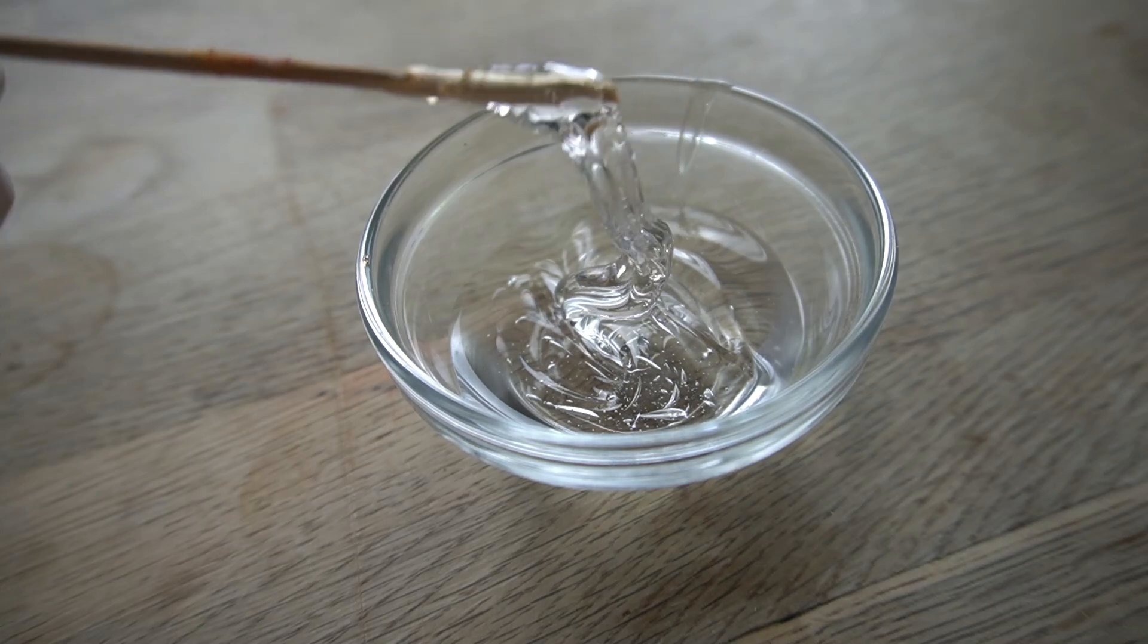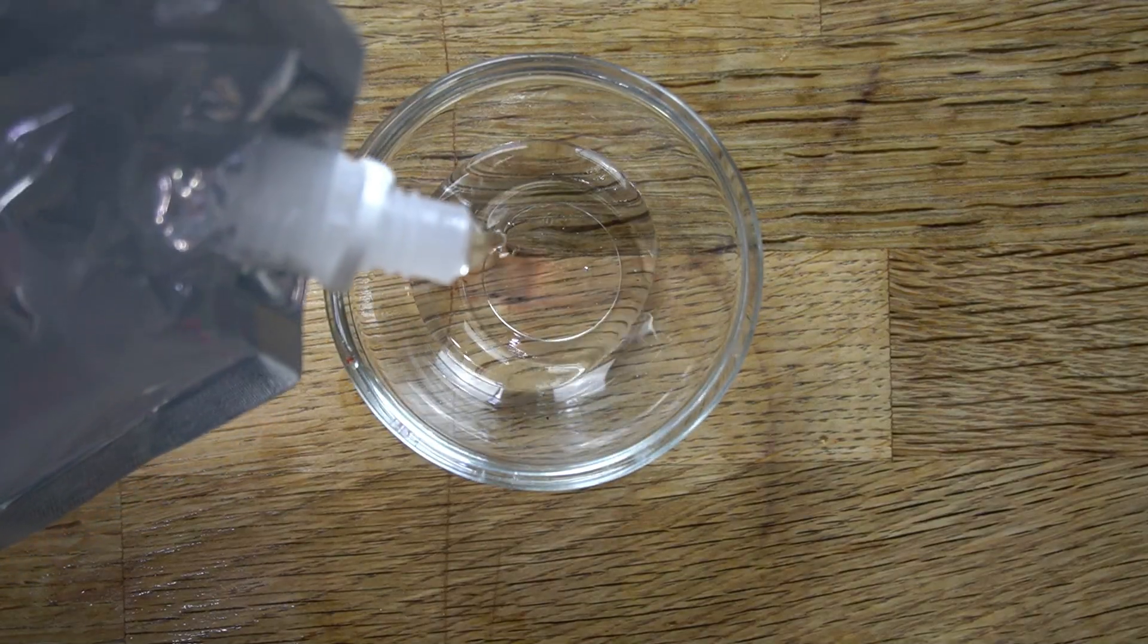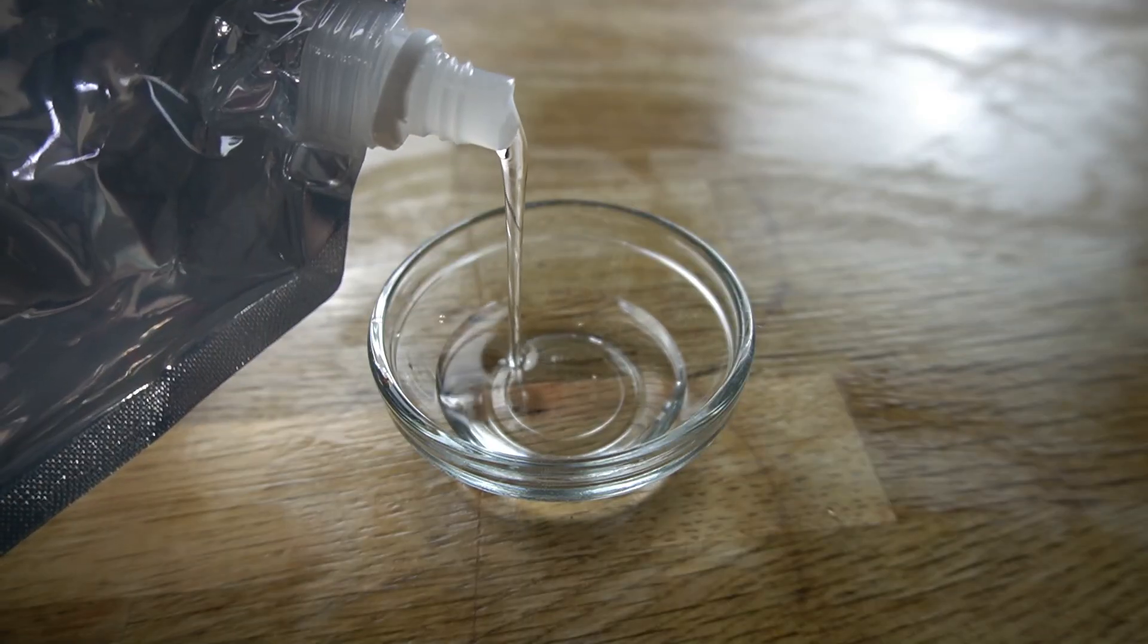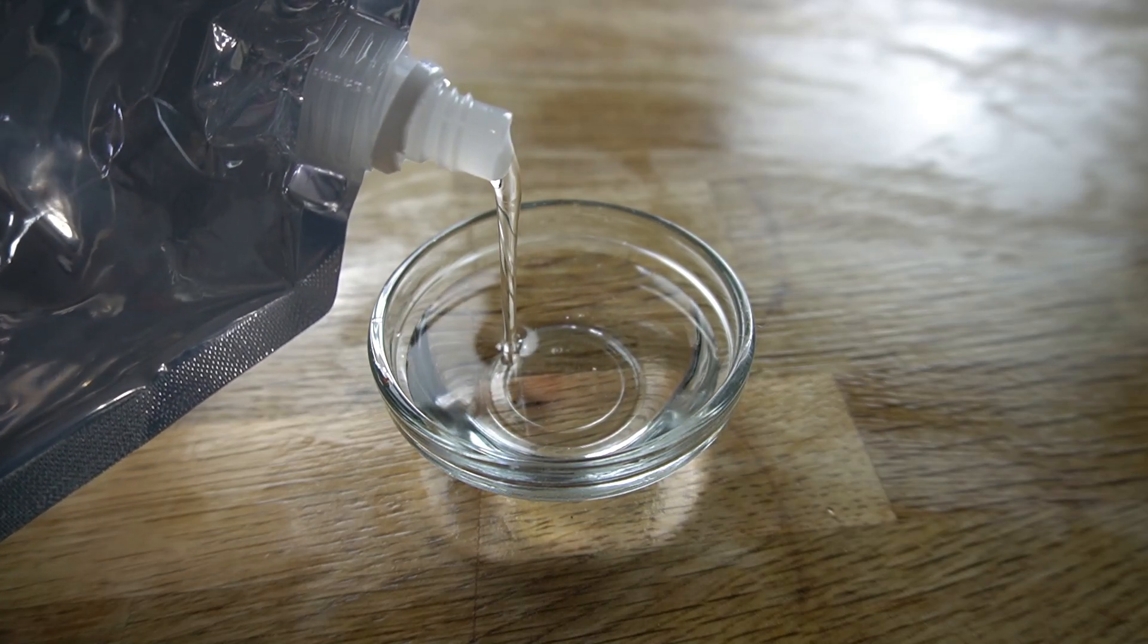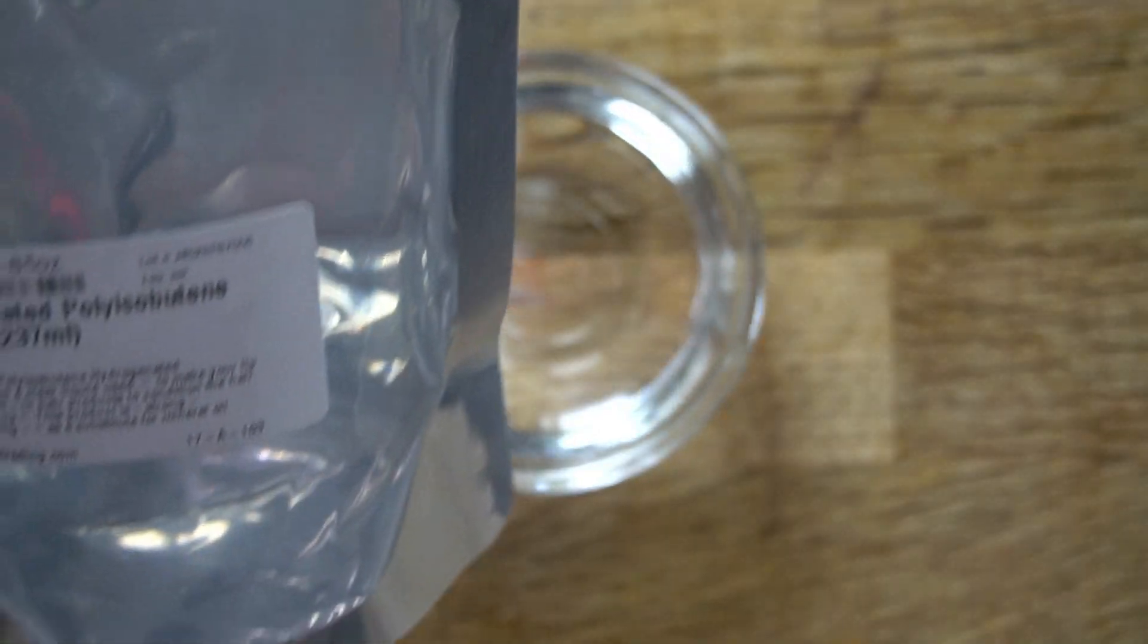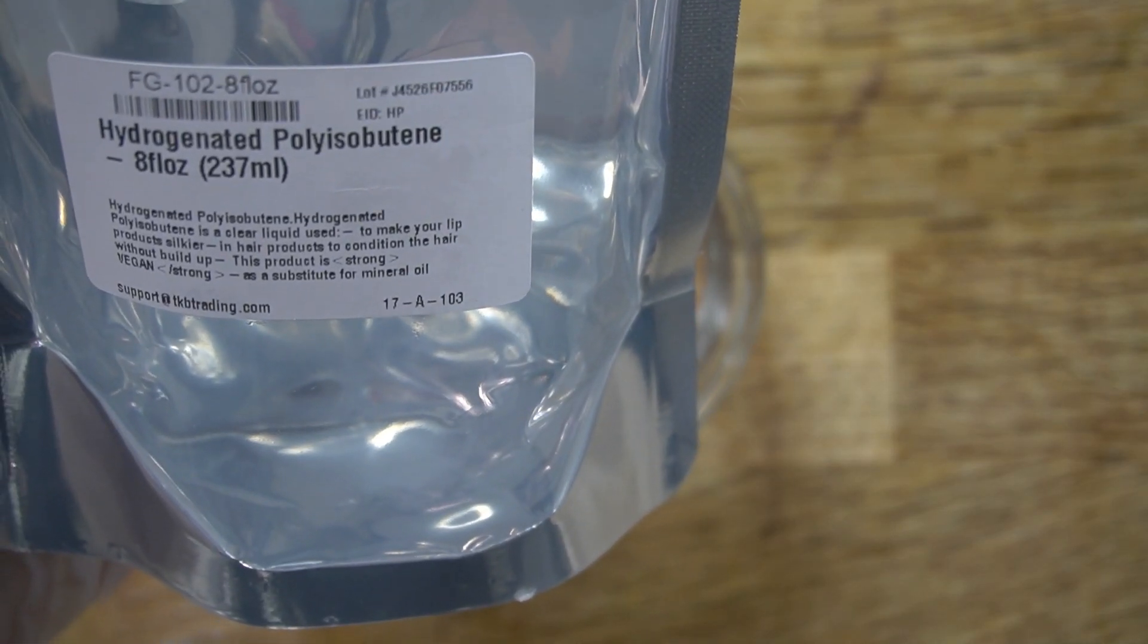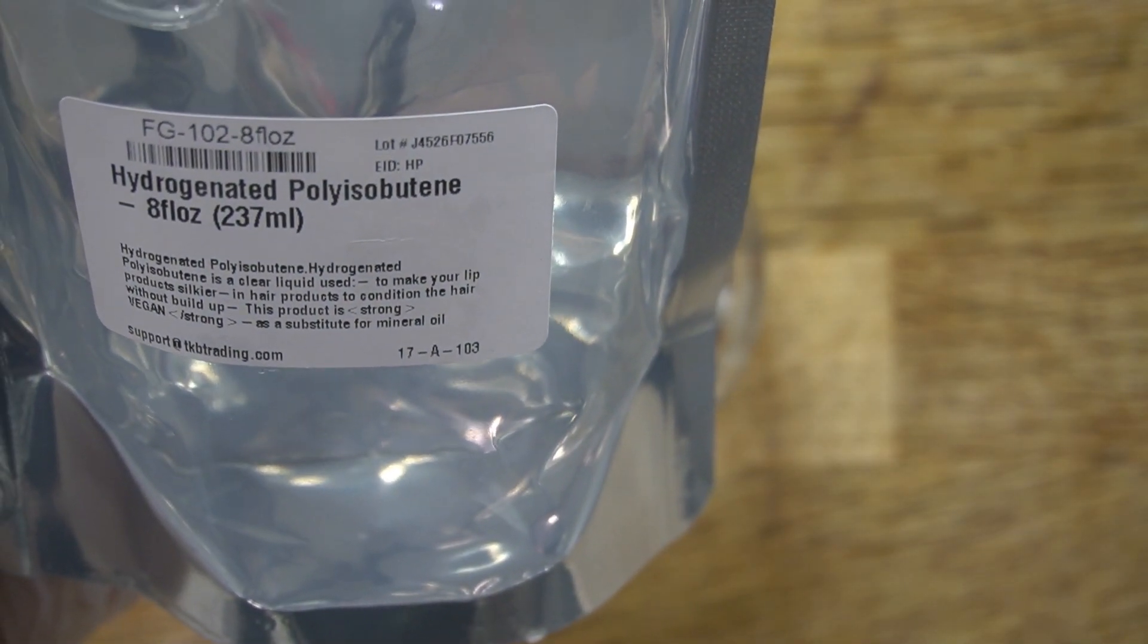Now, to get that texture, I have three suggestions for you. The first suggestion is another chemical called hydrogenated polyisobutene. This is the kid's sister to the polybutene, and it has a different texture and feel completely. This is a much thinner product. It has a texture kind of like olive oil, and this is also crystal clear, just like you were holding a bag of water.